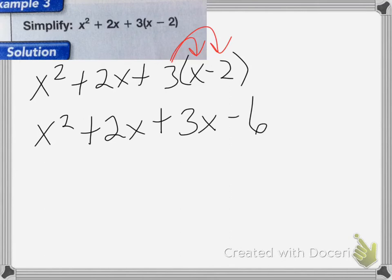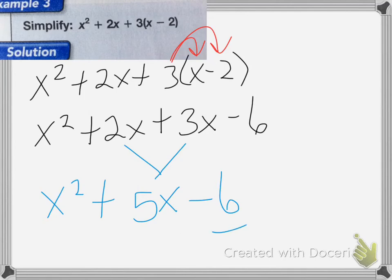Now we combine like terms. The only like terms are the 2x and the 3x, which gives us 5x. So the final answer is x squared plus 5x minus 6.